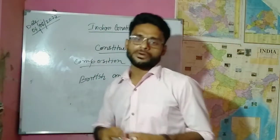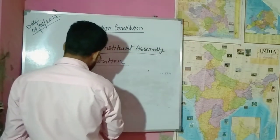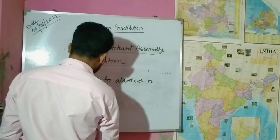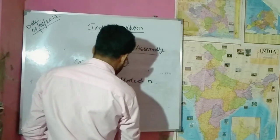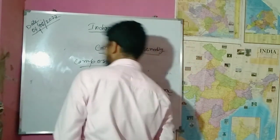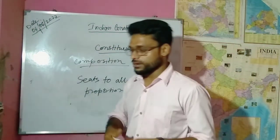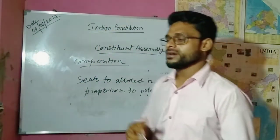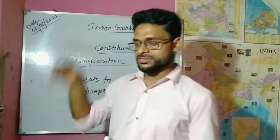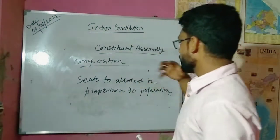Now we are going to discuss about seat allocation. Seats were to be allocated in proportion to population. For example, if the population of any area is 10 lakh, then it should have one member. So by this process, the seats were allocated. This is the composition of our Constituent Assembly.